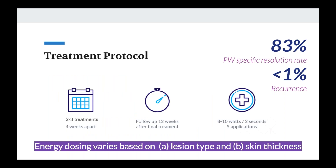The Swift treatment protocol is pretty simple. Patients come in, we set the device to approximately eight watts and hit the lesion for two seconds, five times — ten seconds total. For multiple lesions we target the largest ones, or for a mosaic we may need to overlap. Long-term resolution rate is 83 percent. We also have a 13,000-patient clinical follow-up showing a one percent recurrence rate — that's tremendous, real change.